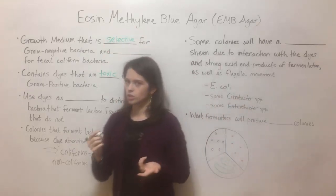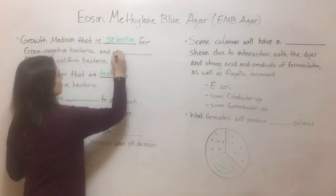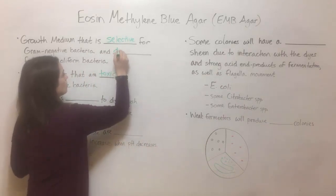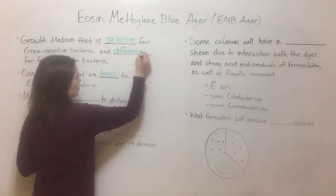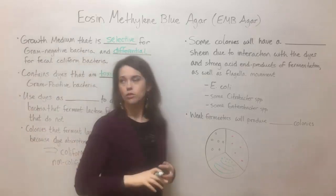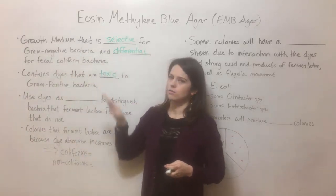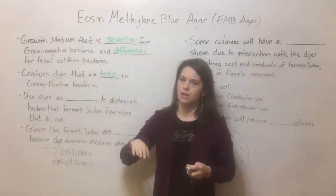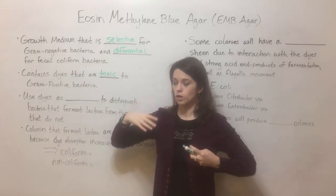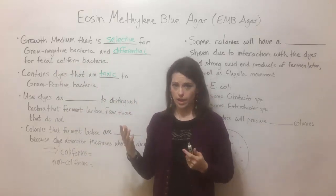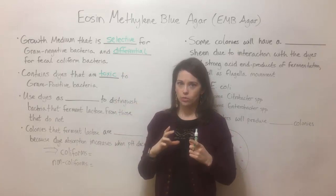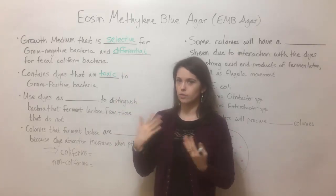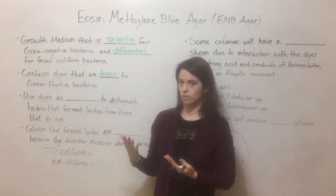EMB agar is also differential — specifically for coliform bacteria. Differential meaning that it allows you, just by the way they grow on the plate, to distinguish coliform bacteria from non-coliform bacteria.